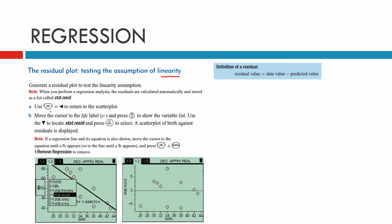You go CTRL and the back arrow, which will get you to the scatter plot. Locate stat reside and press enter to select it. And you'll see that you'll get this residual plot on the right.